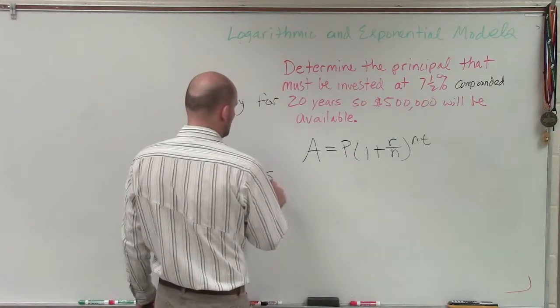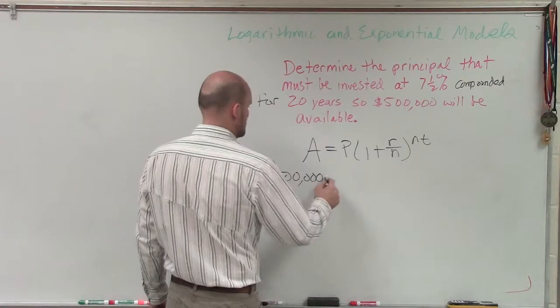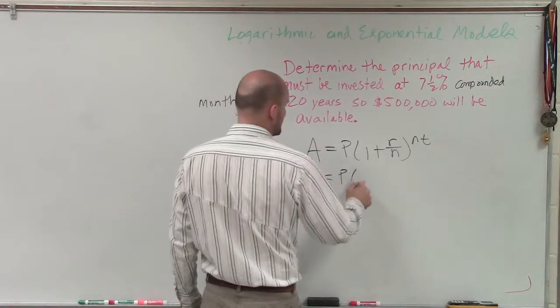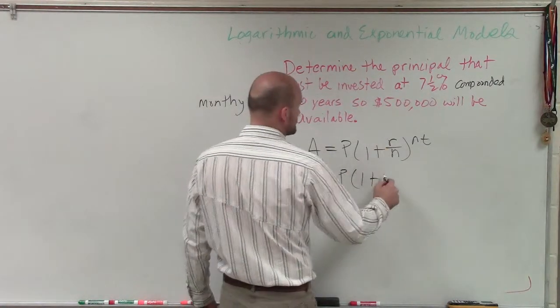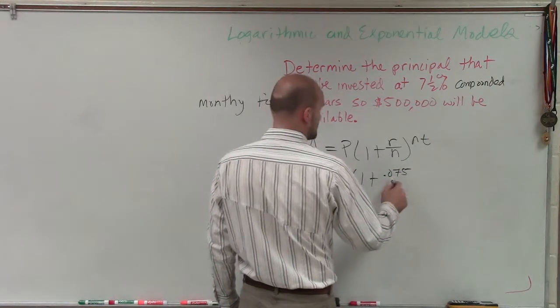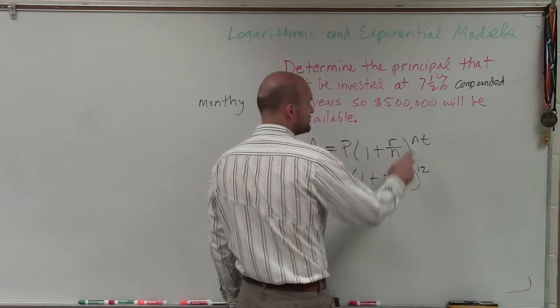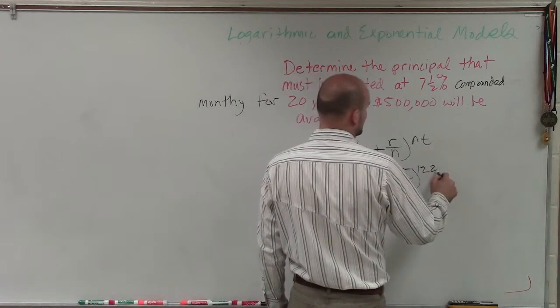So therefore, I'm just now going to plug in all these values. So I have $500,000 equals P, which we're trying to solve for, times 1 plus our interest rate, which is 0.075, divided by 12, raised to the 12 times T, which would be 20.